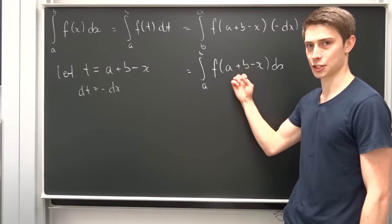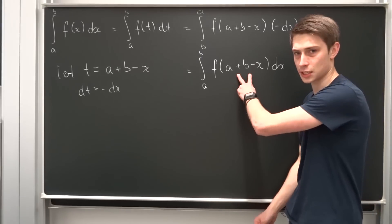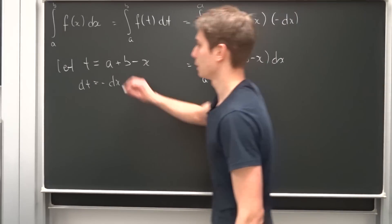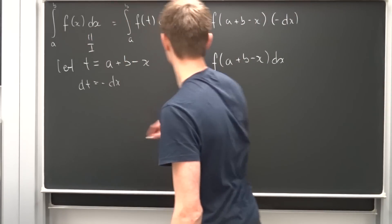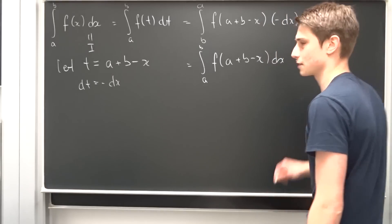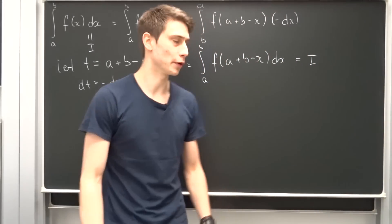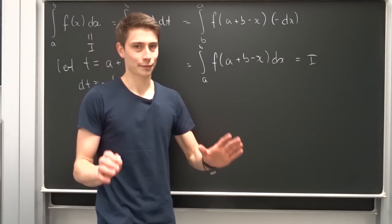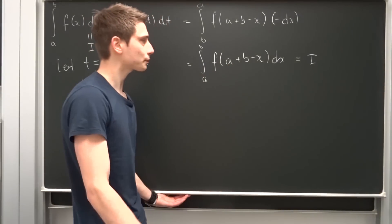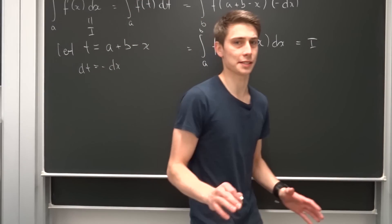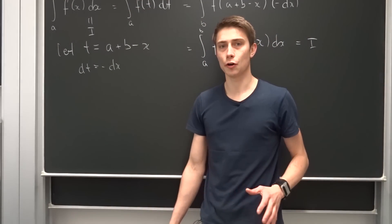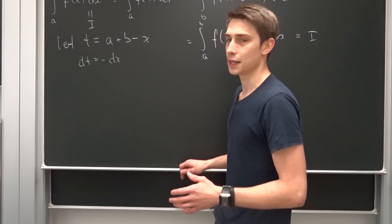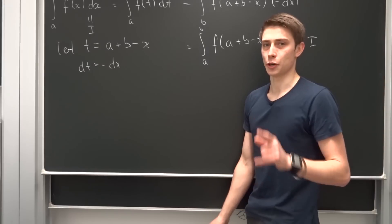We bring the minus to the front and distribute it into the integral by swapping the upper and lower bounds. What we end up with is just the integral from a to b of f of a plus b minus x dx. And once again, this is just a name — so this integral is equal to the original integral. This is i and this is also i. That's the concept of dummy variables. I'm going to make more videos on Putnam exam integrals and we use this idea pretty often.